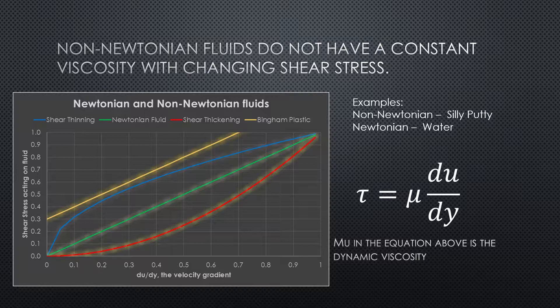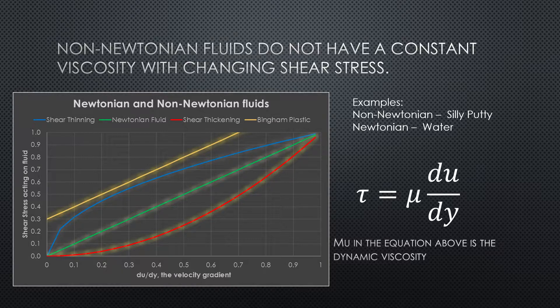Now, the numbers are not important — they're just an example. But the shapes of the curves are. When mu, or the dynamic viscosity, is not constant, you can see you get other shapes besides the green line that travels across that graph.